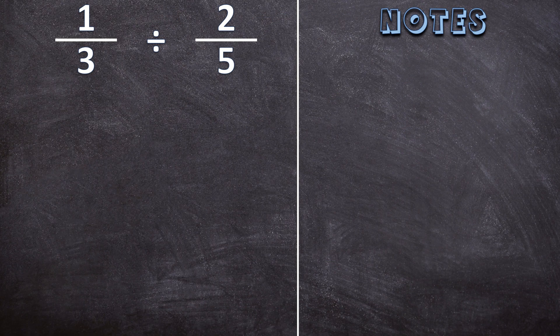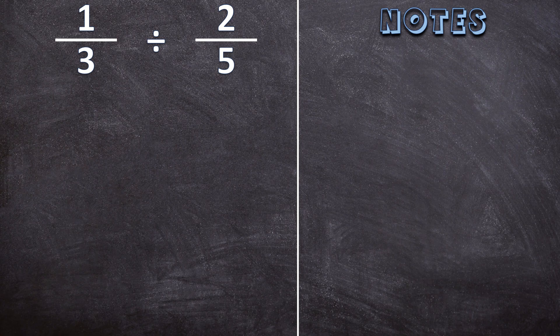So let's start with this example: 1 over 3 divided by 2 over 5. Now I want you to bear with me because in the beginning it may seem very difficult and very complicated, but I promise you I will do this step by step and I believe you'll be able to follow and understand at the end.